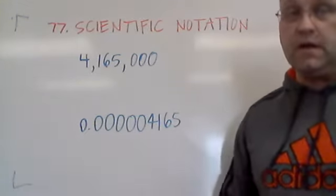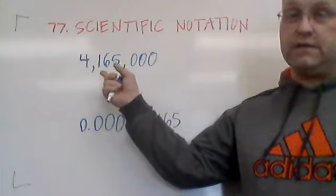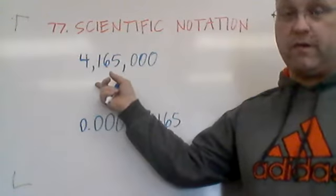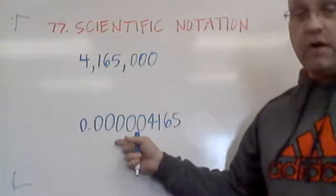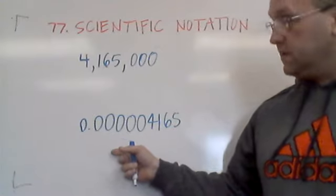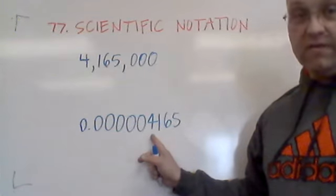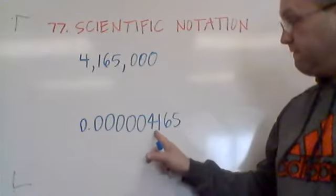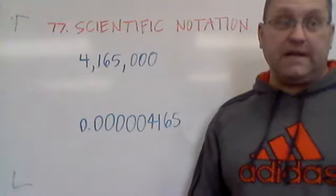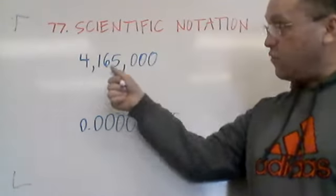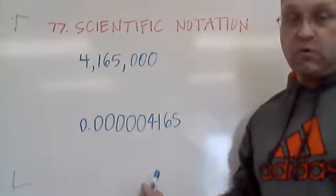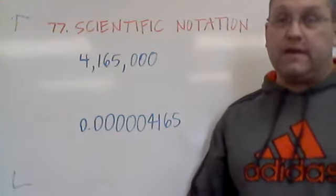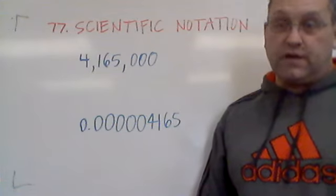So one reason we use scientific notation is to express really large numbers. Here we have 4,165,000 or really small numbers. This would be four millionths with all those decimal places. So it's rather tedious to write out really long numbers or really small numbers a lot of times in mathematical or scientific equations. So we have scientific notation.